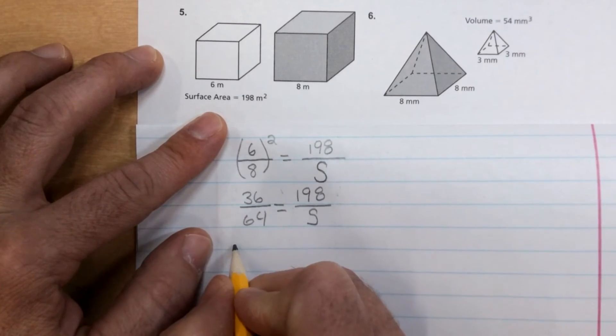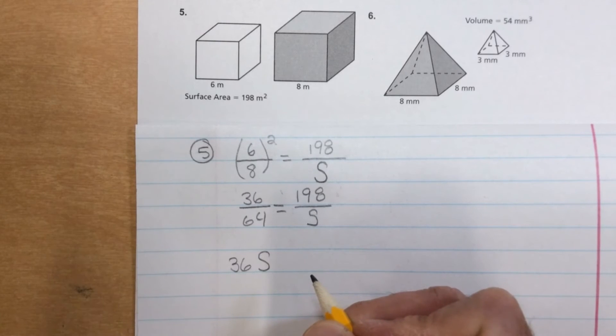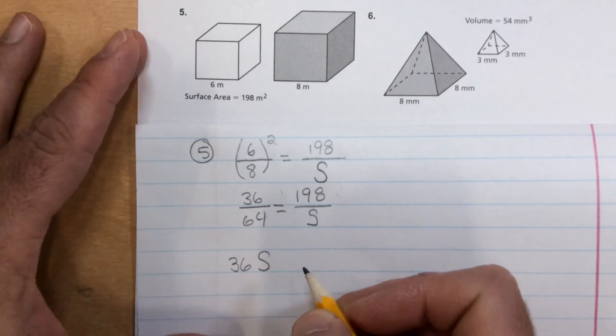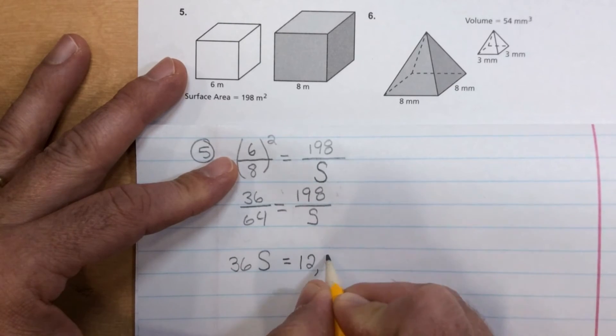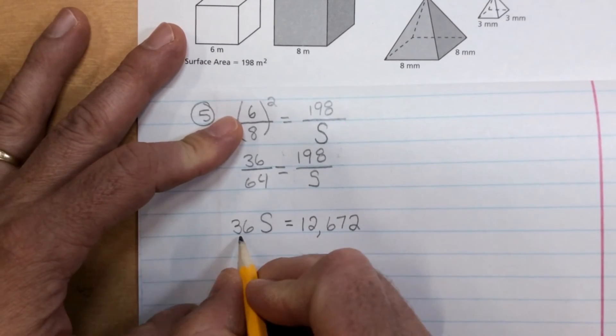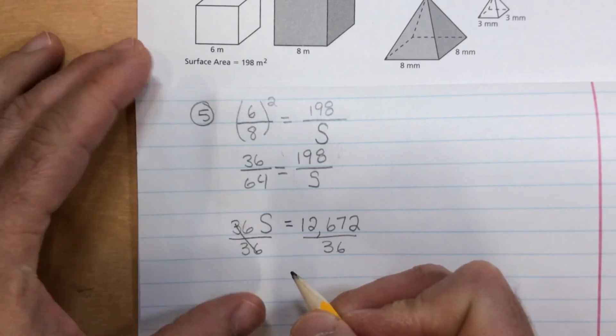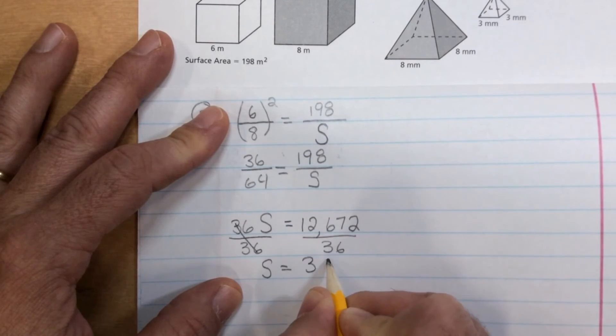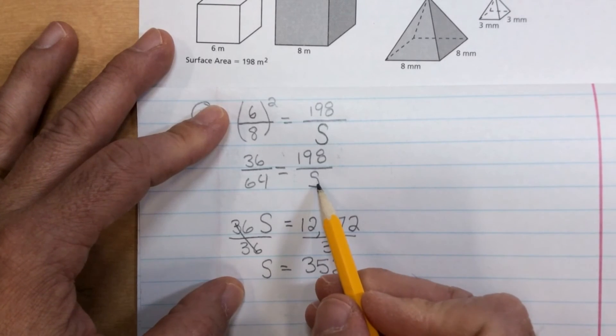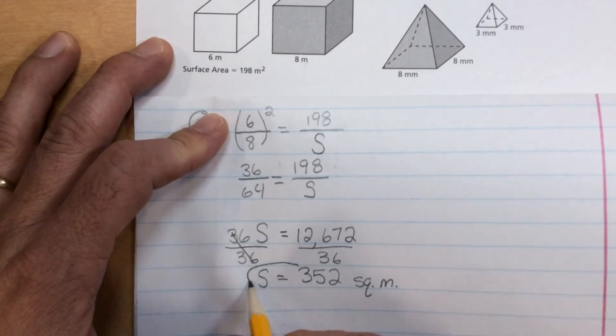Well, 36 times S is 36 S. 36 times S is 36 S. And if memory serves me well, 198 times 64 is 12,672. 12,672 for those of us that know our 64 times tables all the way up to 198. Divide both sides by 36. And we get S equals 352. Now we were finding the surface area. So that's going to be meters squared, okay, or square meters, say 352 square meters.